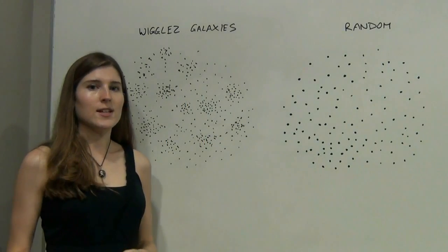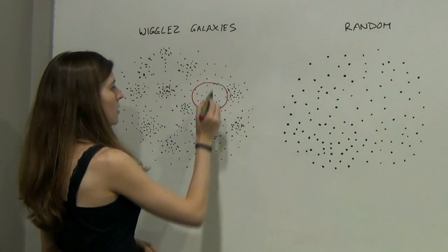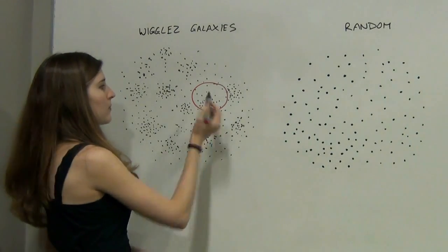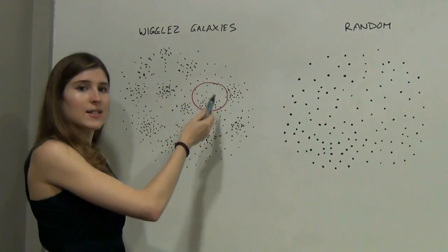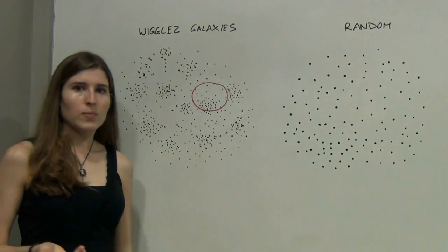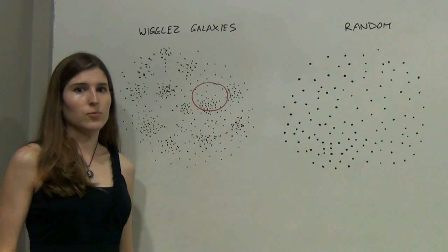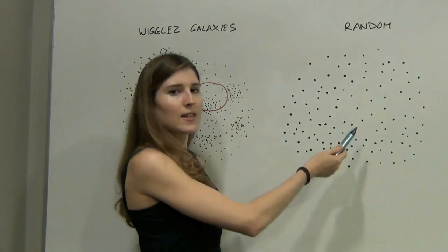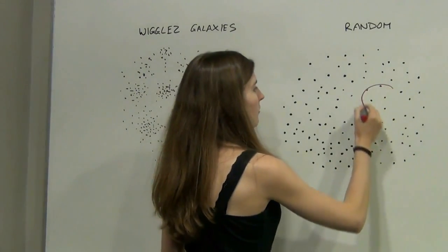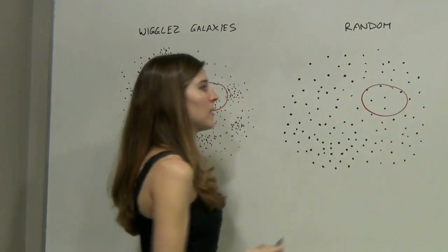To measure homogeneity, we placed imaginary spheres around galaxies in the survey, centered on WiggleZ galaxies, and counted the number of galaxies in these spheres. We wanted to compare this to a random homogeneous distribution, so we generated a random distribution of points like this, and counted the number of random galaxies inside spheres of the same size.